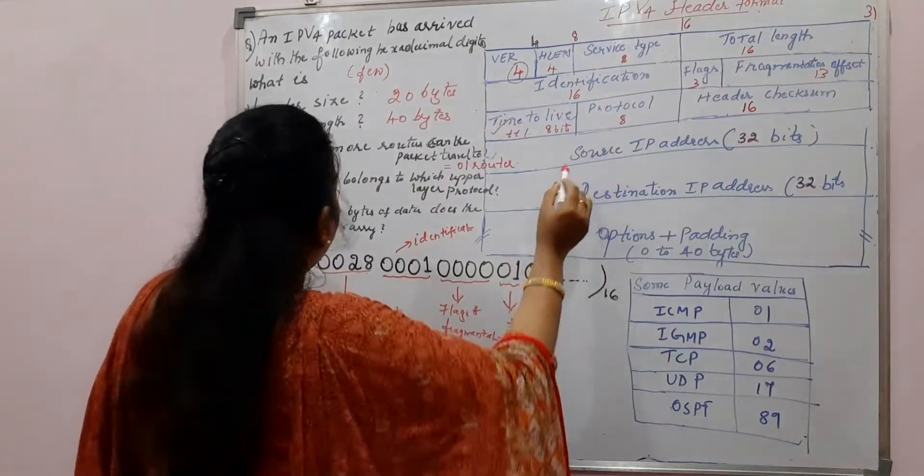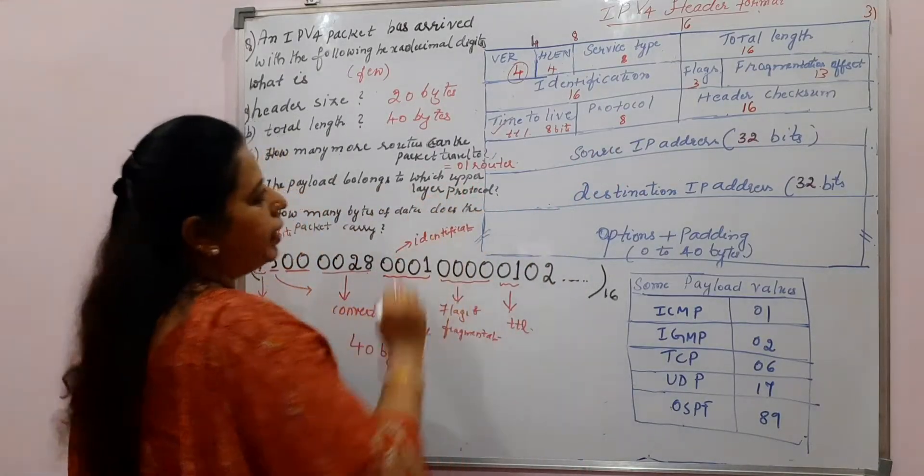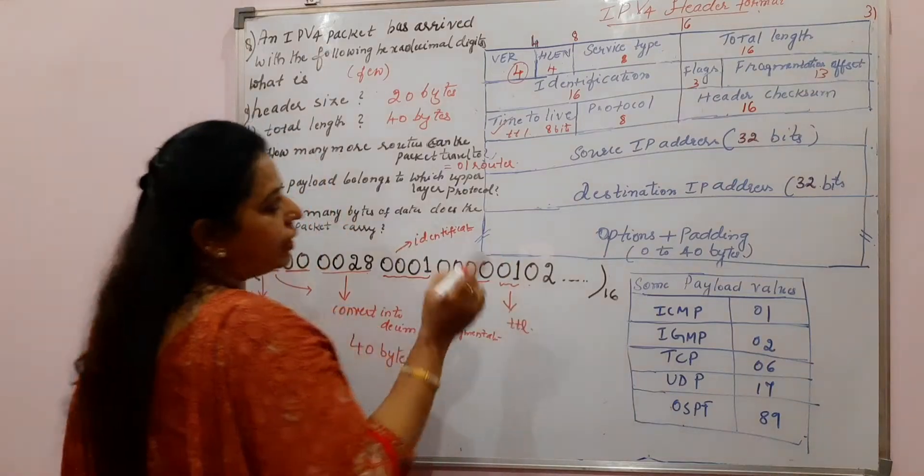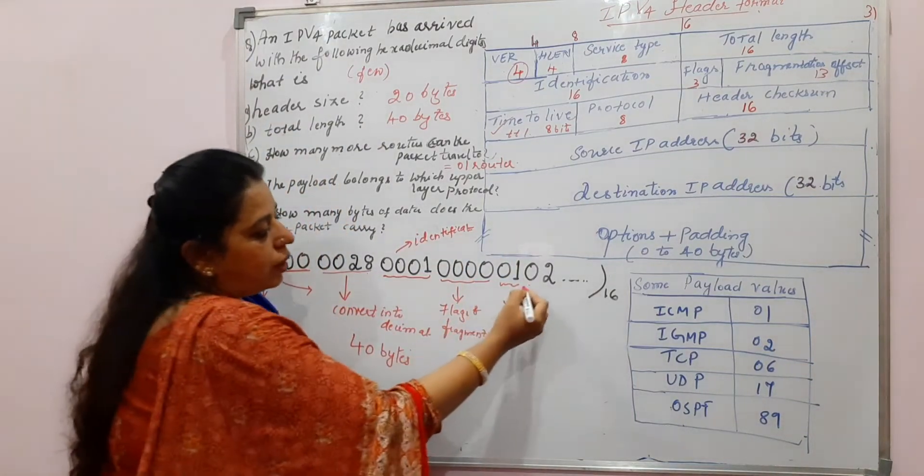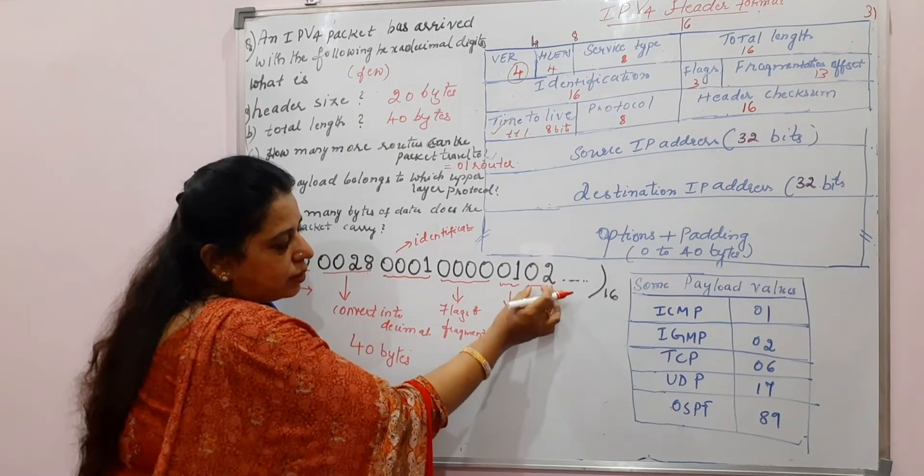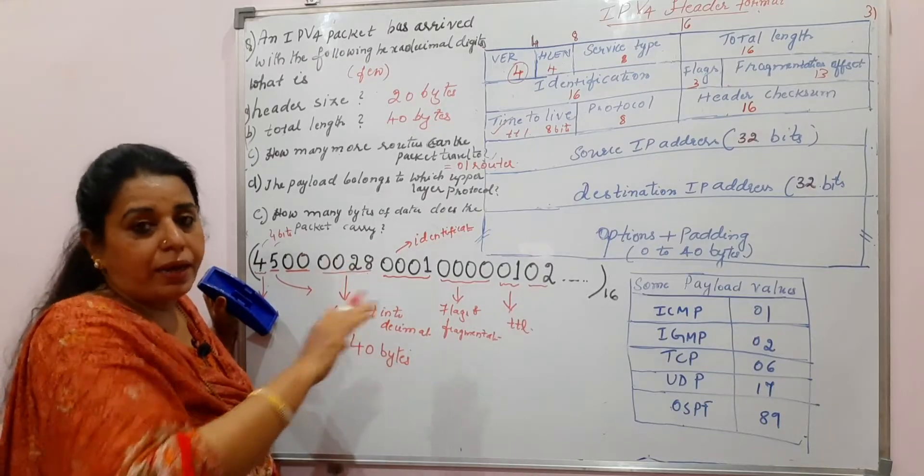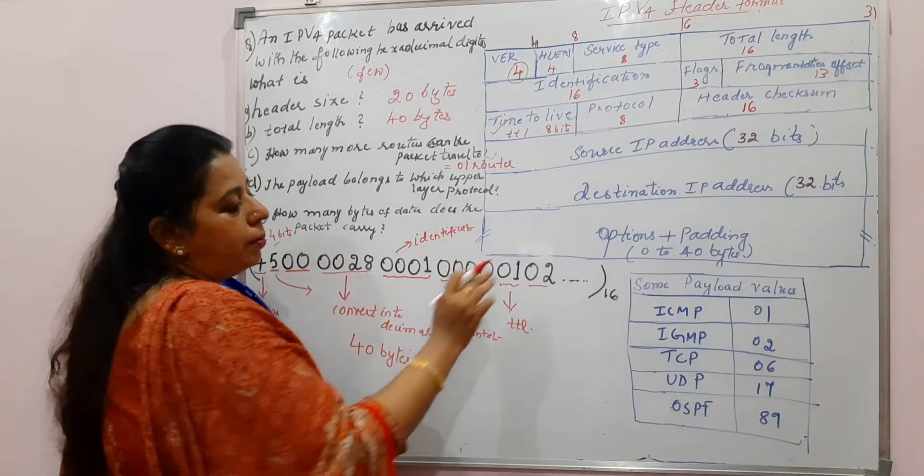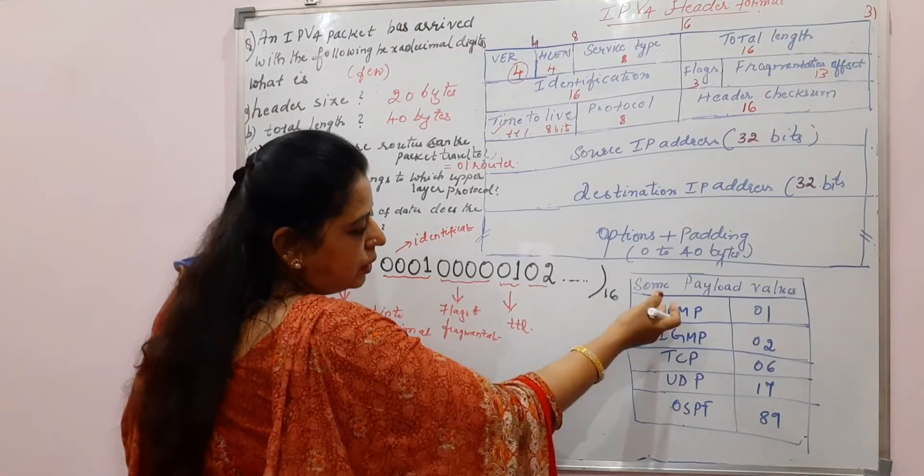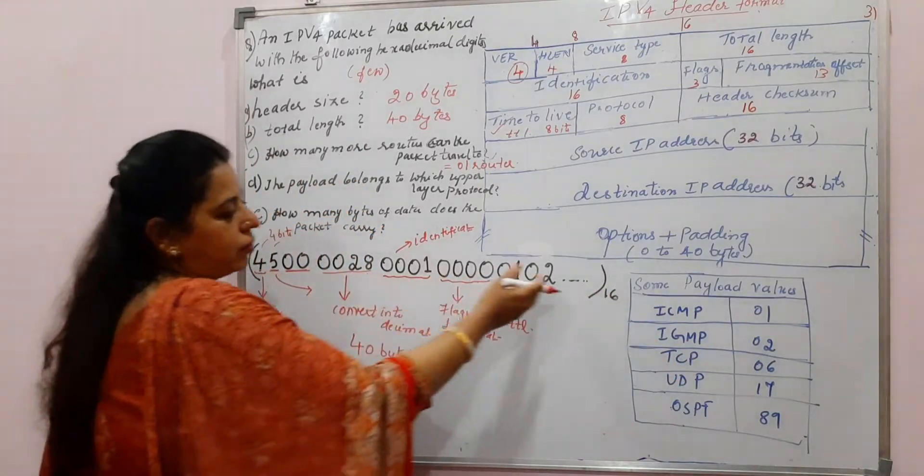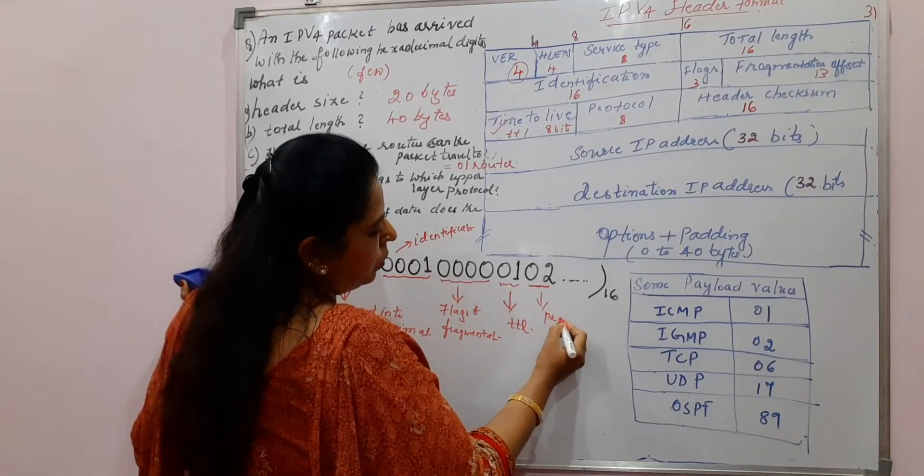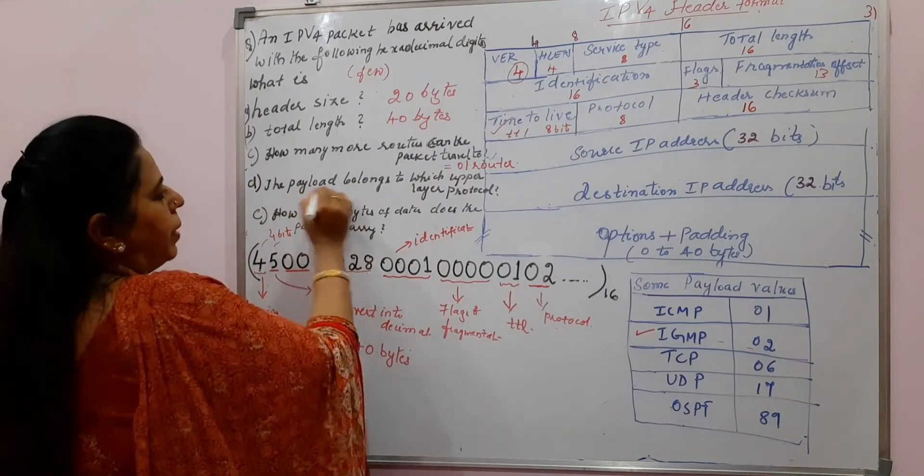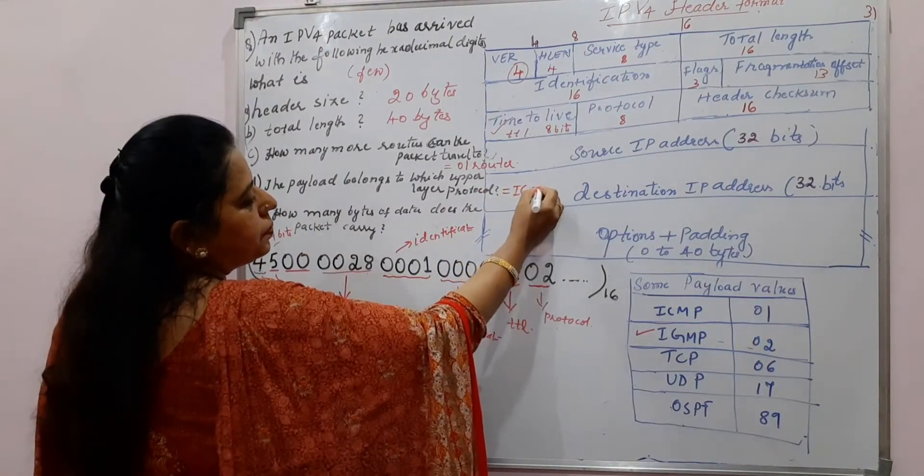The next part of the question is the payload belongs to which upper layer protocol? And that is immediately the next field only. Time to leave. The protocol field. The protocol field is the one which will give you the value for the protocol. This value gives the value of the protocol. Which protocol? Upper layer protocol. And 8 bits are meant here. 2 to the power of 8, 256 values are possible. But you can remember some popular values here. And these values only will be asked most of the time in the question. Here the value is the protocol value is 02. If 02, which is the protocol? IGMP. You can write here the payload belongs to which protocol it belongs to IGMP.